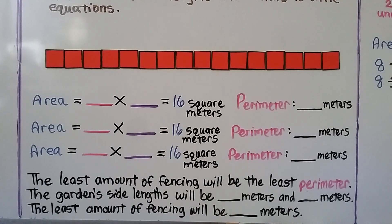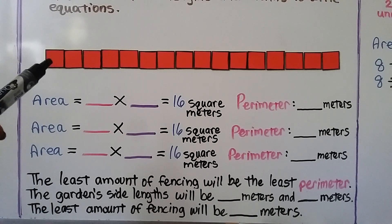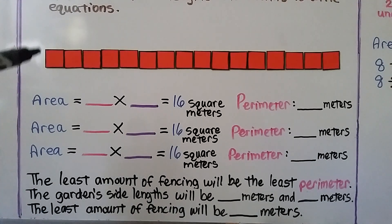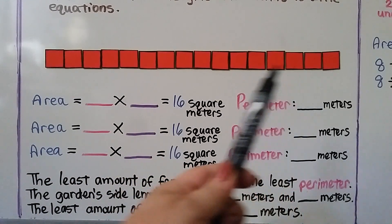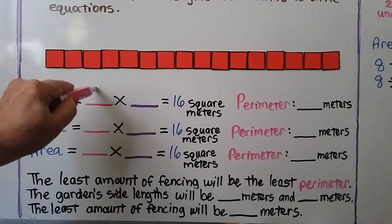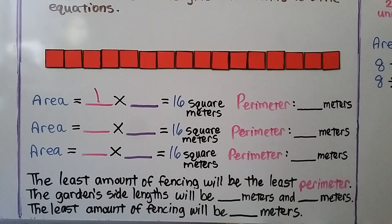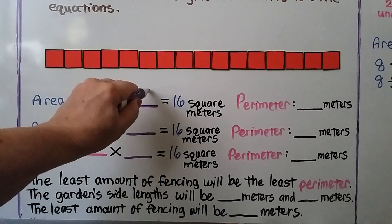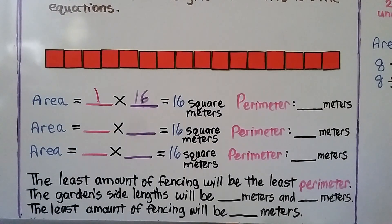Here I've got 16 square tiles, using one square tile for one square meter. You can see a side length of 1 and a width of 16. So our area equals a length of 1 times a width of 16, which is 16 square meters.